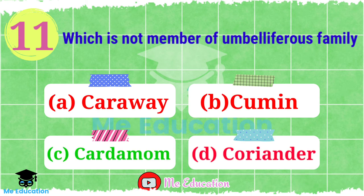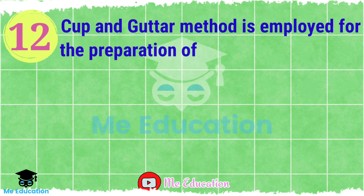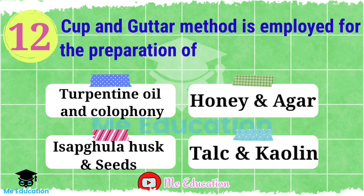Next question, number 12: The copper and gutter method is employed for the preparation of — Option A: turpentine oil and colophony; Option B: honey and agar; Option C: isabgol husk and seeds; Option D: talc and kaolin. Your time starts now — pause. The right answer is Option A, turpentine oil and colophony.